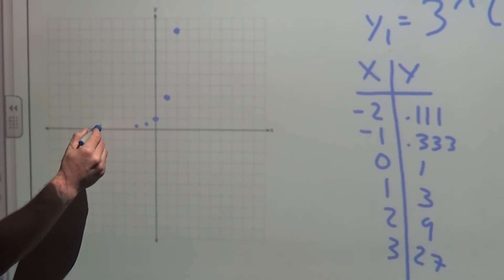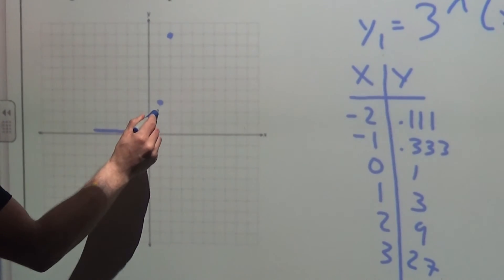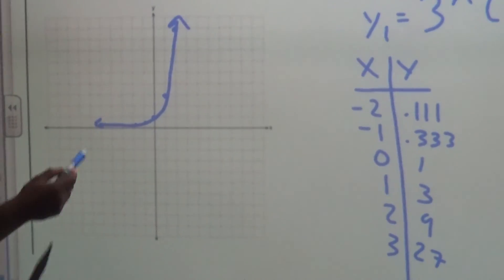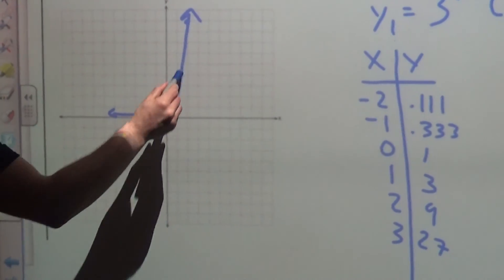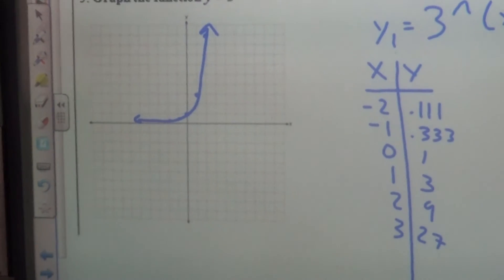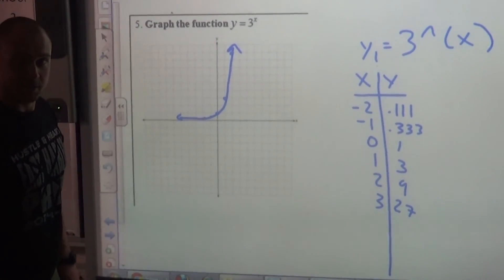So we're going to be really close to this line, and then we're going to go up. Exponential growth starts small, and then it gets big very quickly. Good luck graphing exponential functions.